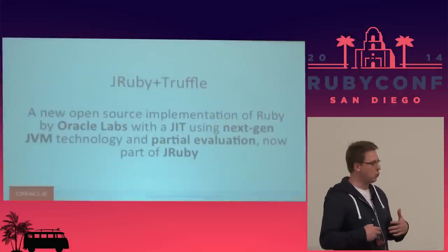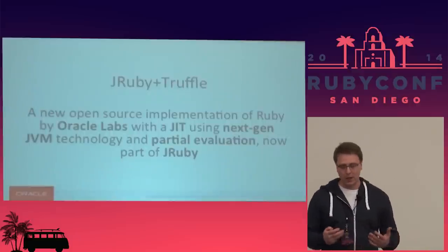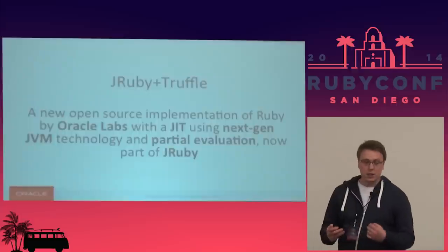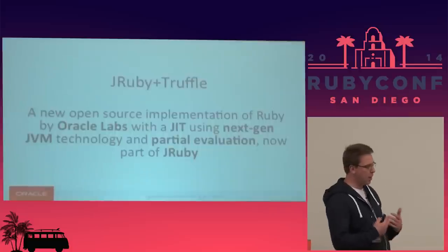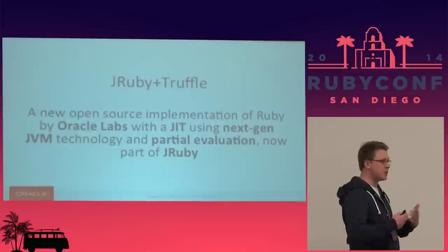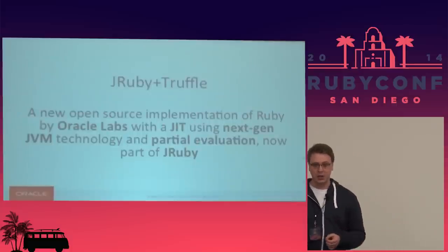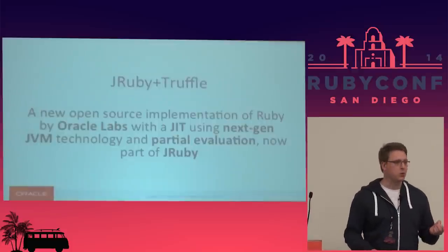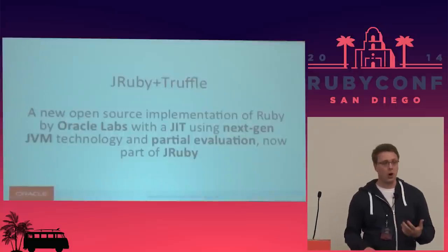I'm working on a new system called JRuby Plus Truffle. It's a new open source implementation of Ruby by Oracle Labs as a research project, with a JIT using next generation JVM technology and partial evaluation. It's now part of JRuby — it started as an independent implementation but the JRuby community welcomed us and we've now merged our implementation into JRuby.